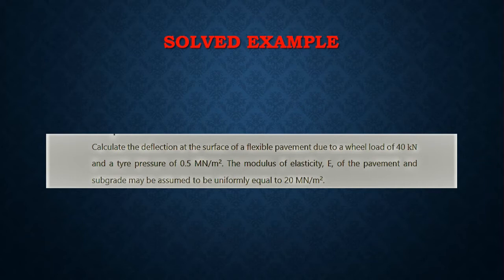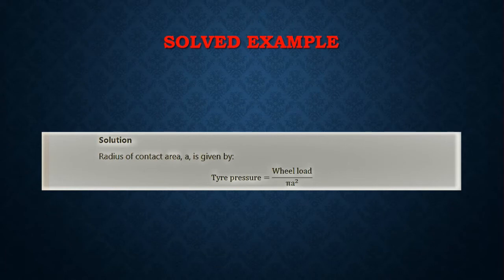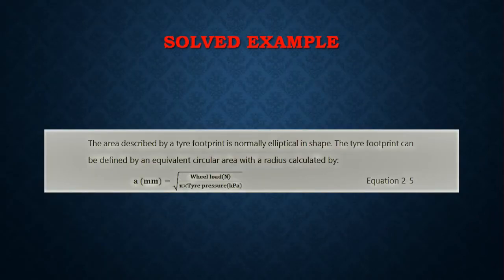The radius of the contact area 'a' is given by the tire pressure. First we find the tire pressure: tire pressure equals wheel load divided by pi times a squared, where pi a squared is the area of the contact area. The area described by a tire footprint is normally elliptical in shape, but the tire footprint can be defined by an equivalent circular area with a radius calculated from this formula.